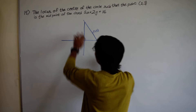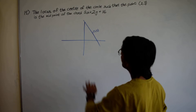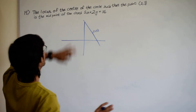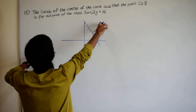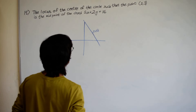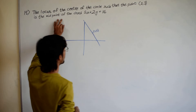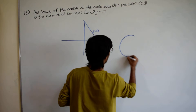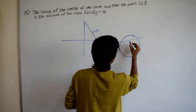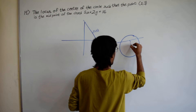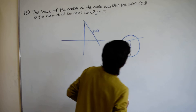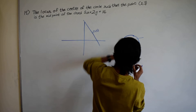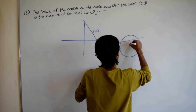We know this is the chord of the circle. We don't know the circle, but we have to find the locus of the center — that is, the set of all possible positions of the center, which should be a variable. We know that the perpendicular bisector of a chord of a circle must pass through the center of the circle, so if we find this perpendicular bisector line, the center would lie on it.